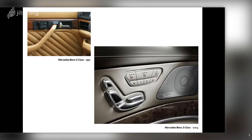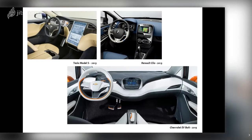Another Mercedes-Benz detail: the seat adjustment controls use the shape of the seat itself as the command interface — very intuitive. In 1991 it was just a black plastic part, but now it has chrome and lettering. The function is exactly the same; only the style has changed. This chrome version is naturally more interesting than the plain black plastic part.